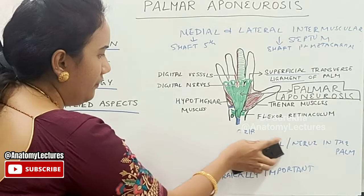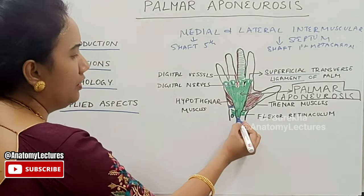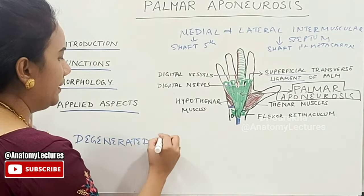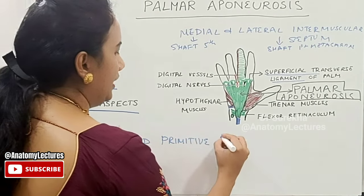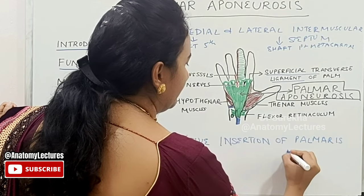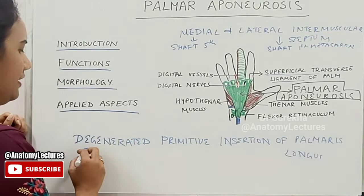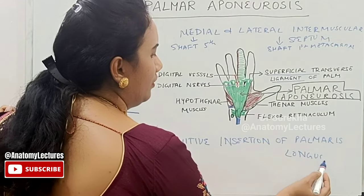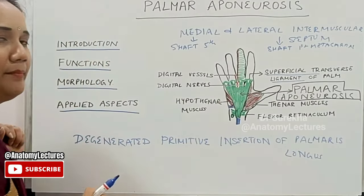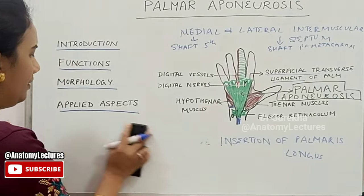Regarding morphology, the palmar aponeurosis is nothing but the degenerated primitive insertion of palmaris longus. The palmaris longus tendon was primitively inserted in this broad fashion across the palm. With evolution, the insertion of palmaris longus changed, and its primitive insertion remained as the palmar aponeurosis.